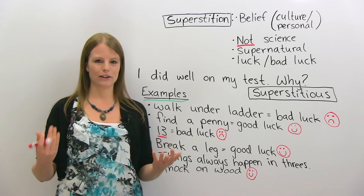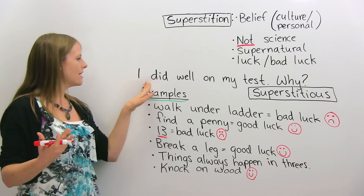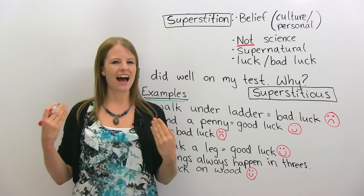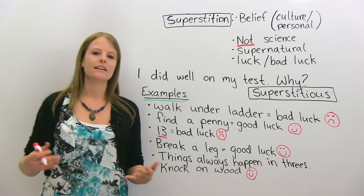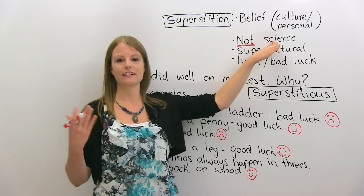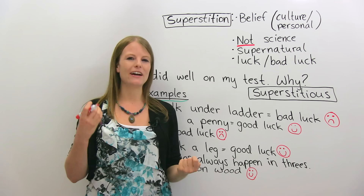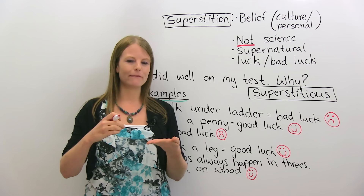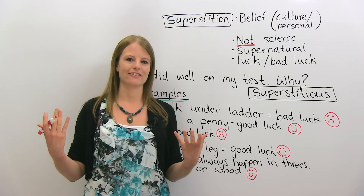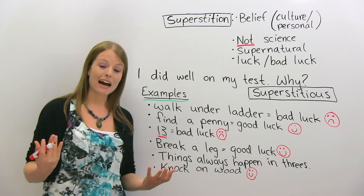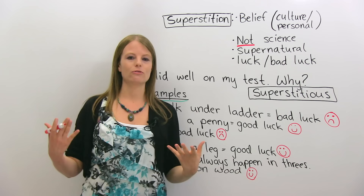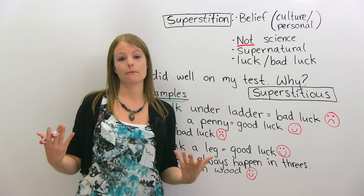Let's start with an example. Imagine this: I took a test and I did really well — I got a very high score. Why did I do well? Maybe you think I probably studied well, which is a scientific explanation. But maybe I brought a lucky pen or lucky pencil to the test, and I think any time I use this pen I'm going to do well. It's my lucky charm. If you think I did well because I have a lucky pen, that is an example of a superstition — it's a belief or ritual to get good luck or keep bad luck from happening.